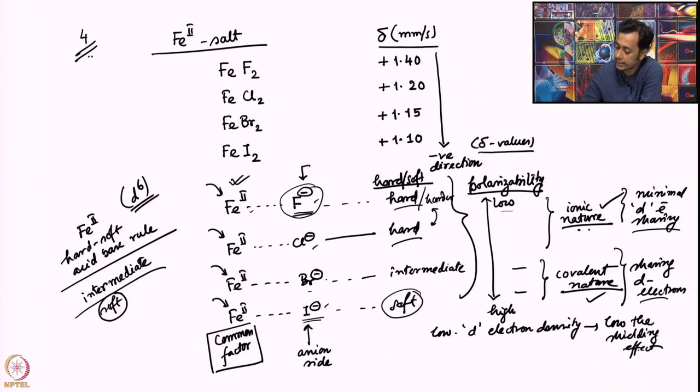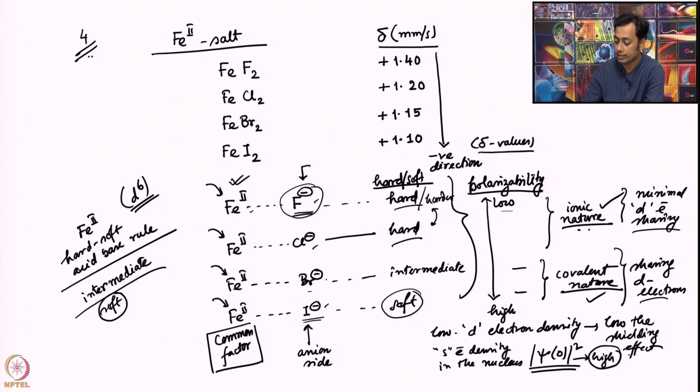If I have a low shielding effect what is going to happen? My S electron density, which is nothing but psi 0 square, is going to be a high value when there is low shielding effect. Psi 0 square value will be the highest for iron iodide because most of the d electron is moving out as much as possible. S electrons are not feeling any shielding effect, it has all the chances to go in the nucleus and psi 0 square will be high.